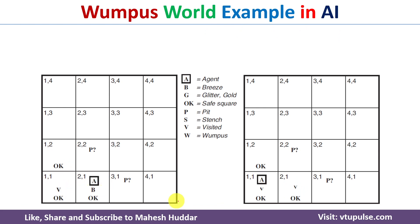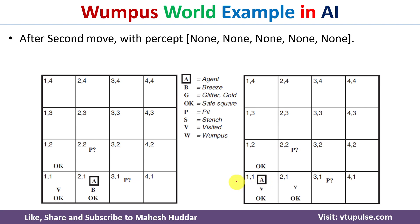Whenever the agent is back in the initial state, as said earlier, it will not perceive stench, breeze, glitter, bump, or scream. This means the adjacent squares (1,2) and (2,1) are safe. Since (2,1) is already visited, there is no use going there again. So the agent will go from (1,1) to (1,2).